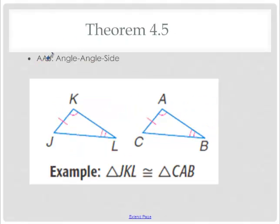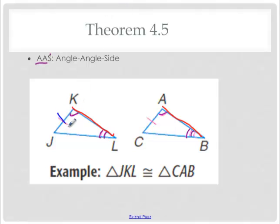Then we have AAS — angle, angle, side — two angles, but with a side that is not in between the two angles. Here's angle and angle; AAS will work as long as KL and AB are not used. You could use either JK and AC, or JL and CB. Remember, it goes in that order: two angles with a side not in between them. If you write it as SAA, it's really the same thing, because you can go left to right or right to left.